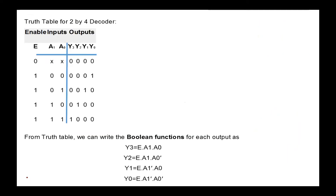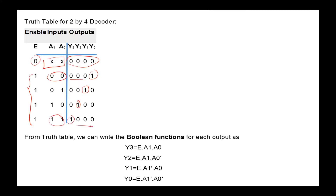To design the decoder, we first obtain the truth table. If enable is zero, all outputs from Y0 to Y3 are zeros regardless of inputs A0 and A1. If enable is one and the input is 00, output Y0 is one and all others are zero. If the input is 01, Y1 is one; if 10, Y2 is one; and if 11, then Y3 is equal to one and all other outputs are zeros.